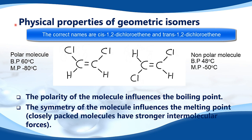Physical properties of geometric isomers. We have cis-1,2-dichloroethene and trans-1,2-dichloroethene. The cis isomer has the same groups on the same side of the double bond, and the trans isomer has the same groups on opposite sides of the double bond.